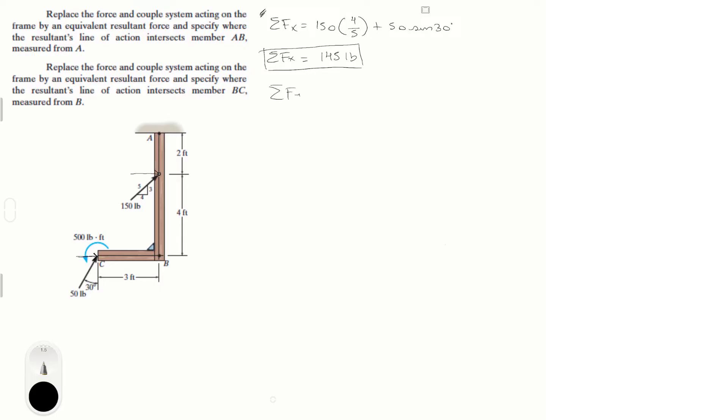Sum of the forces in the Y is given by the Y component of this force, which is 150 times 3 over 5, and the Y component of this force, which is given by 50 cosine of 30 degrees. Apply this into your calculator and you get 133.33 pounds.